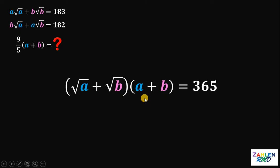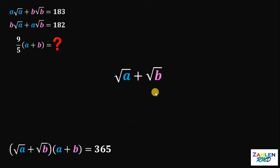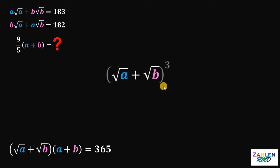Notice that we now have A plus B in our expression. If we can find the value of square root of A plus square root of B, then we're done. So let's set aside this equation and focus on finding the value of square root of A plus square root of B. To do that, we need to raise this expression to the power of 3.